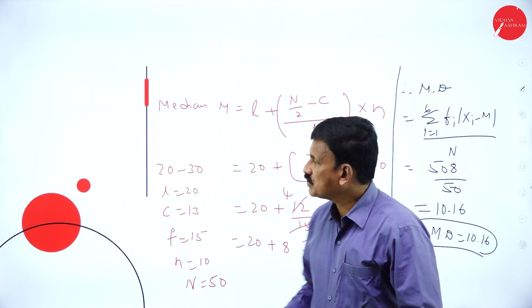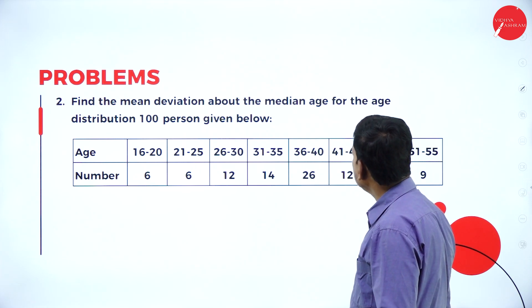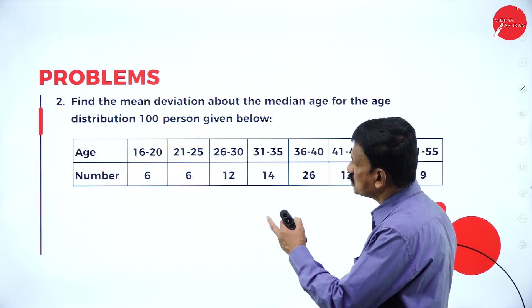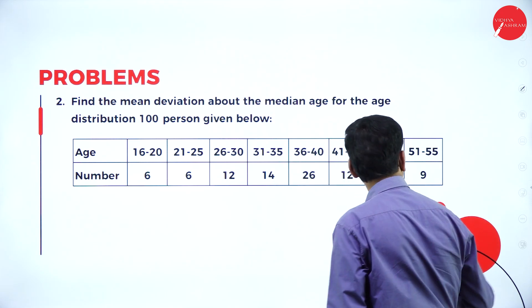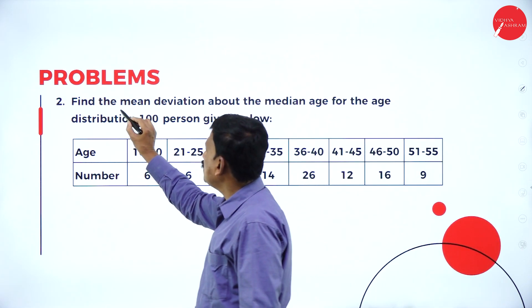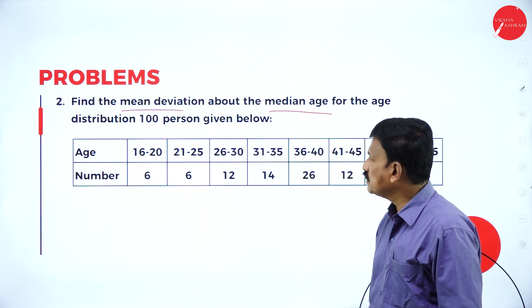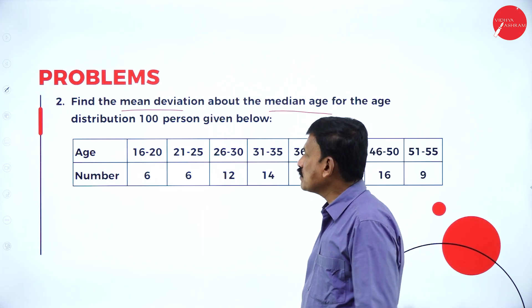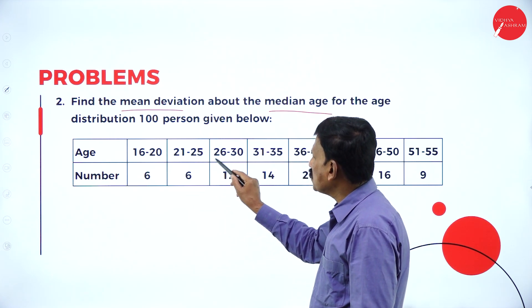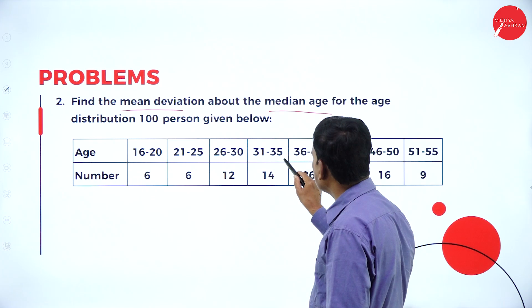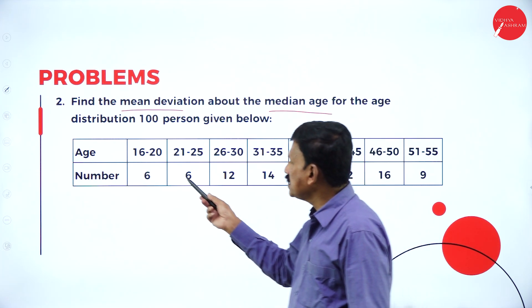Now move on to the next problem: find the mean deviation about the median age for the age distribution of 100 persons given in the table. What we need to find is the mean deviation about the median. If you observe carefully, the class intervals are 16 to 20, 21 to 25, 26 to 30, 31 to 35, and so on. This is not continuous data, this is not continuous.